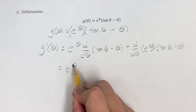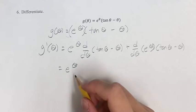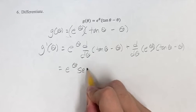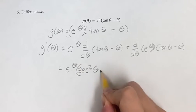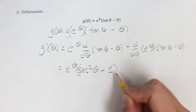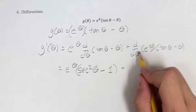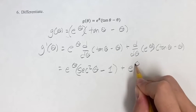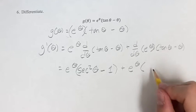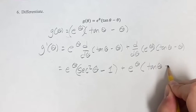So we have e to the theta, the derivative of tangent theta is secant squared theta minus the derivative of theta is just one it's a linear term, plus the derivative of e to the theta is just e to the theta times tangent theta minus theta.